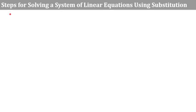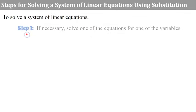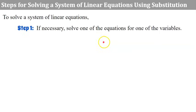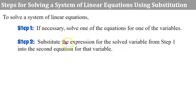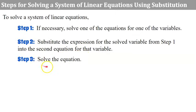Here are the steps for solving a system using substitution. Step one, if necessary, solve one of the equations for one of the variables. So if one equation isn't already y equals an expression or x equals an expression, you're going to need to solve one of them for x or y. Step two, substitute the expression for the solved variable from step one into the second equation for that variable. Step three, solve the equation.